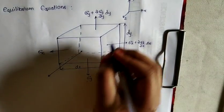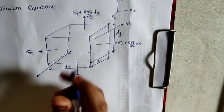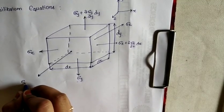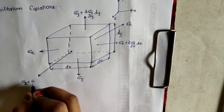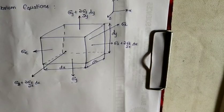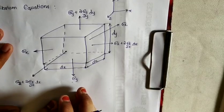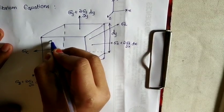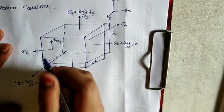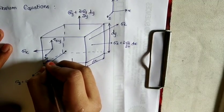In the z-direction, stress is induced. That is sigma z plus (∂sigma_z/∂z)dz. Now, after normal stresses, shear stresses are also induced on each face. This is tau_x in the y-plane, which is tau_xy.